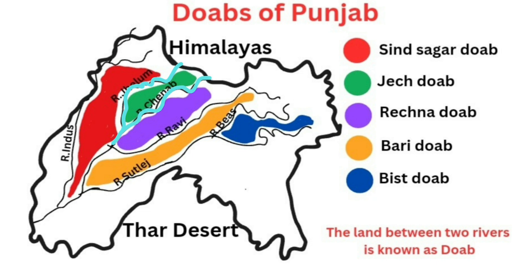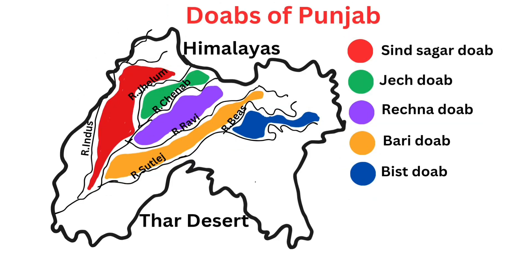The land between two rivers is known as a Doab. The five Doabs of Punjab are: Sind-Sagar Doab, Jech Doab, Rachna Doab, Bari Doab, and Bist Doab.